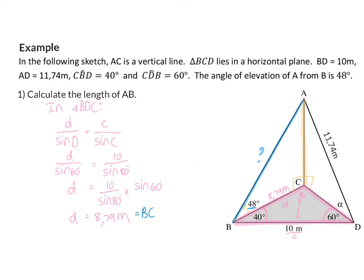And now that we have the length of BC, we can go and work in triangle ABC. In triangle ABC, we have a 90 degree angle, and that means we can use the normal trig ratios.